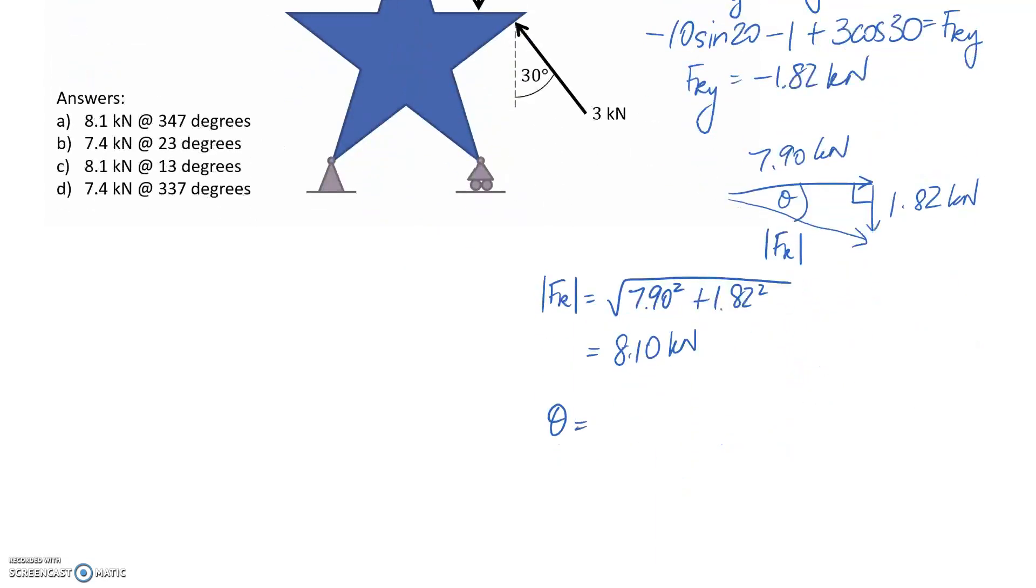And we should be able to get it from either sine, cos, or tan, since we actually know all sides. But I'm going to go with tan. So it's going to be tan inverse of the opposite side, which is 1.82, divided by the adjacent side, which is 7.90. So this angle in here is 13 degrees.